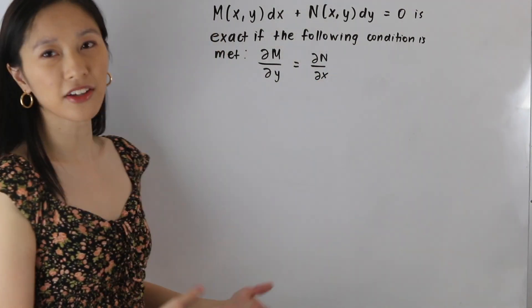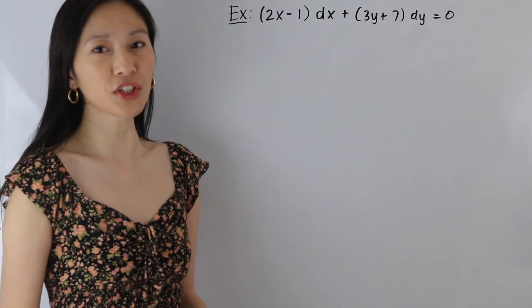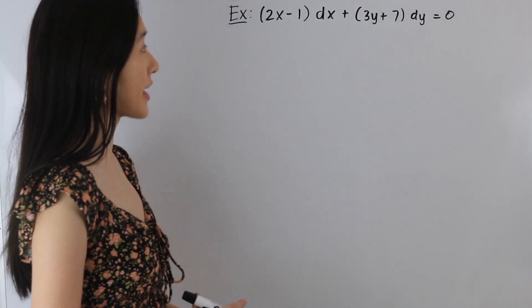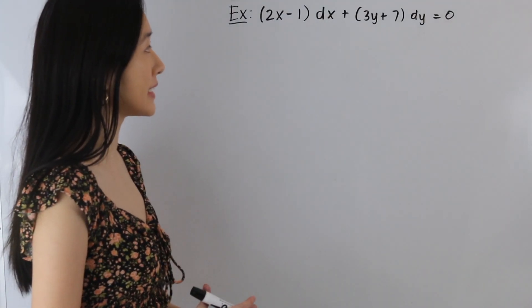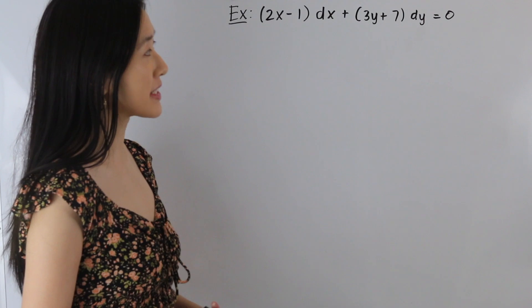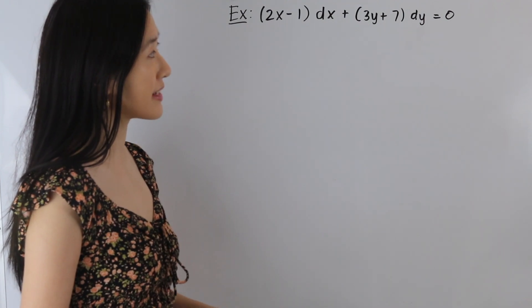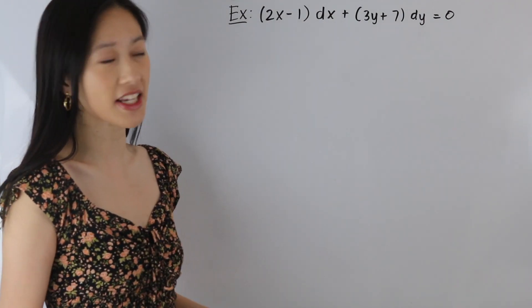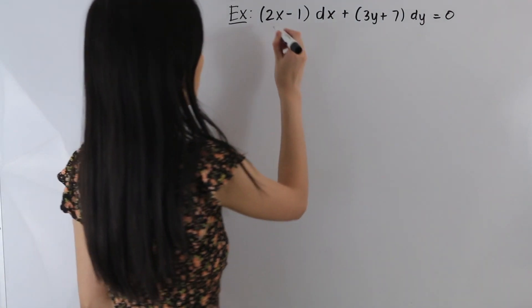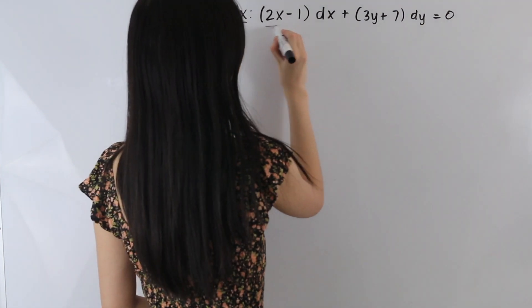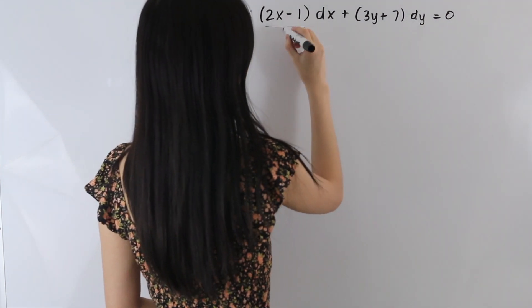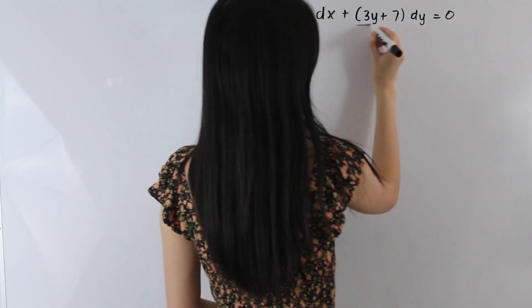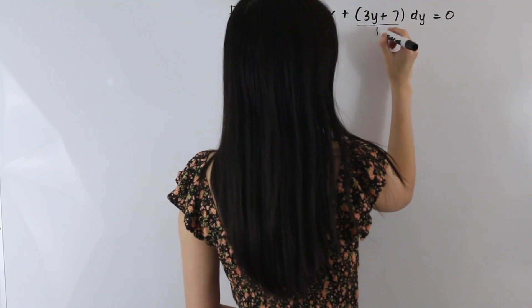Let's go ahead and take a look at some examples. In this first example, we have (2x − 1)dx + (3y + 7)dy = 0. As our first step, we're going to identify what M and N are equal to. Here we have M, and here we have N.